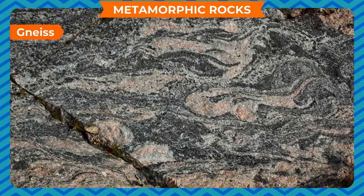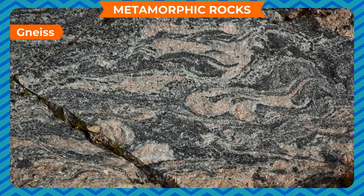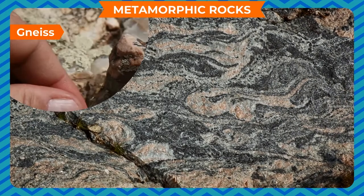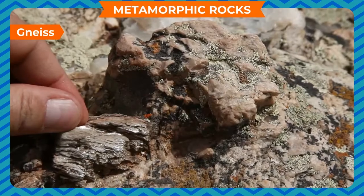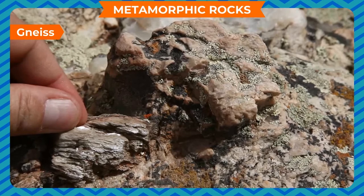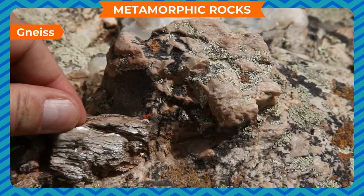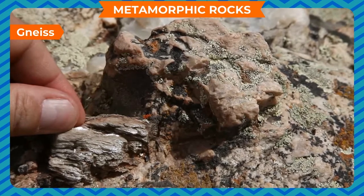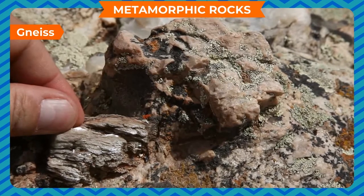Gneiss is a metamorphic form of the igneous rock granite. It contains mica and various types of minerals which give it a striped look. It is mostly used as a building stone.